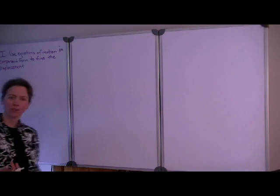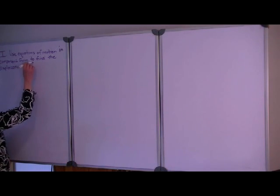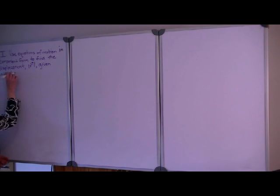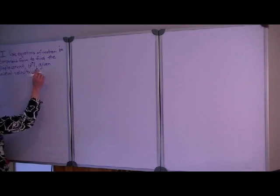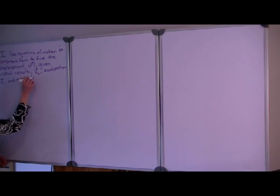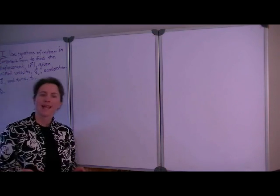The displacement, if you recall, is the magnitude of the position vector, so we'll denote it here as the magnitude of the vector r. In this problem, we are given initial velocity, which we'll call the vector v-naught, acceleration, which is the vector a, and time t. As we develop this problem, we will make a sketch of what's happening and then make a point-by-point plan for how we will evaluate the problem.